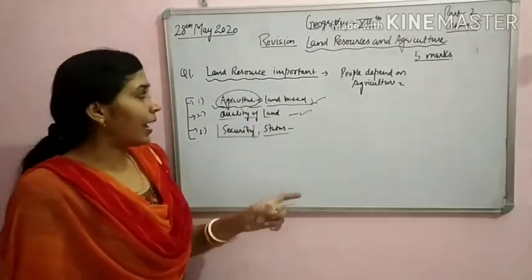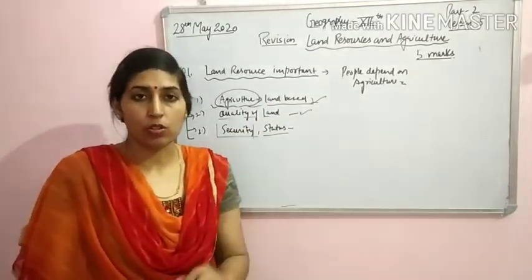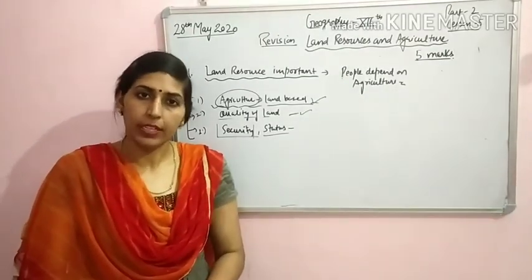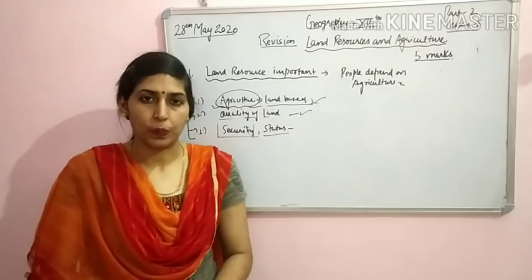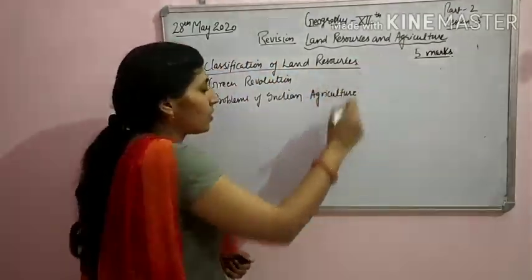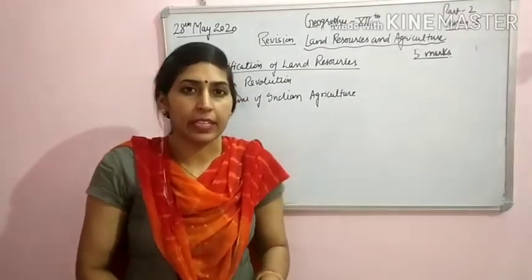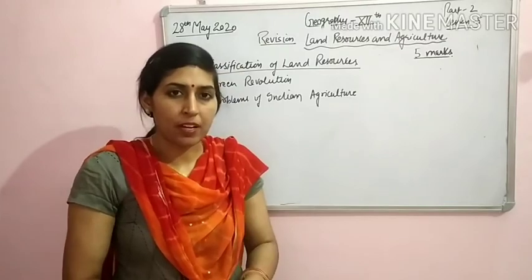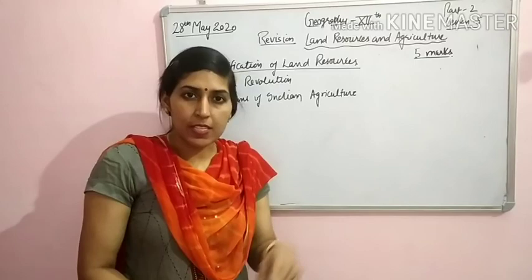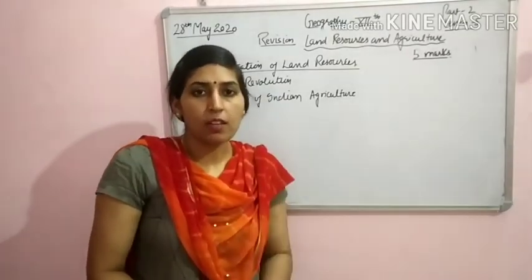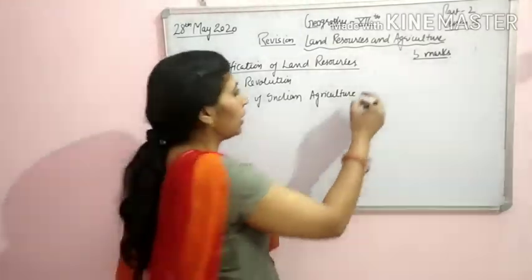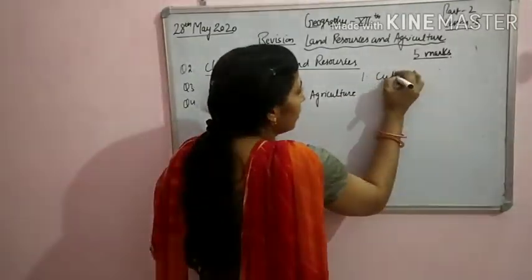So we can say that land resource is very important for people who depend on agricultural processes. Next five-mark question: classification of land resource — which we discussed before. Land is divided into nine parts: forest area, pastures, permanent pastures, groves and orchards, barren land and wasteland, current fallow, cultivable wasteland, other than current fallow, and net sown area.